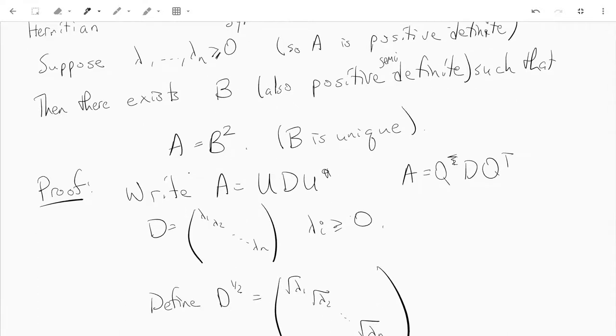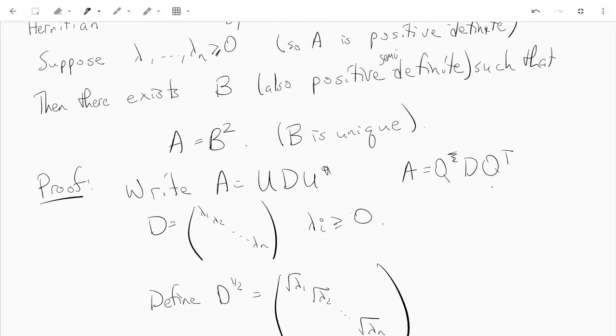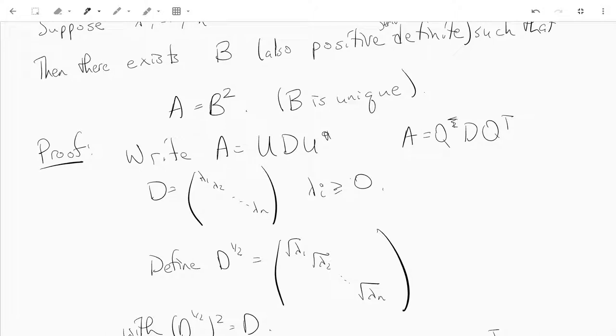The proof is similar whether it's Hermitian or symmetric, so write A equals either UDU* where U is unitary, or A equals QDQ^T where Q is orthogonal, and D is just the diagonal matrix with eigenvalues on the diagonal.